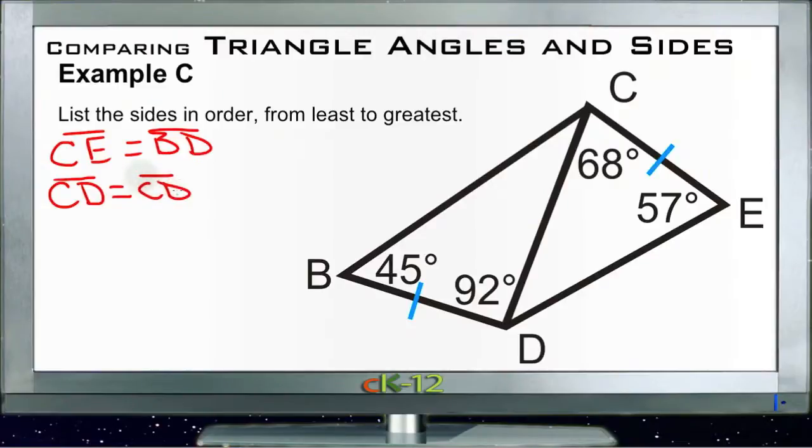So let's find those missing angles. If we know that B is 45 and BDC is 92, then we know that 45 plus 92 plus, let's call this angle Y over here, plus Y is equal to 180. And 90 plus 40 is 130, and 5 and 2 is 7, so we have 137 degrees plus Y equals 180.